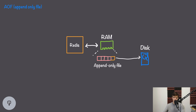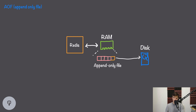Another solution that solves some of these issues is AOF, or Append-Only File. With AOF, instead of storing the entire Redis datastore to disk, we save an append-only log of all the write operations that have ever been made to the database. For example, if we set key A to five, then increment key A, then increment key A again, that'll be three commands saved to the append-only log. We call it append-only because we can only write to the end of this log — we can never overwrite previous data.